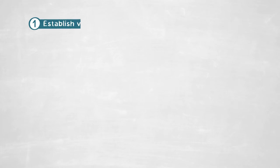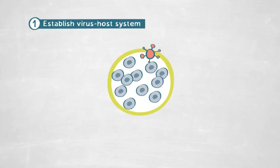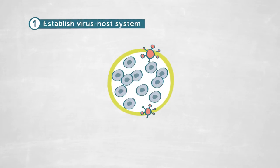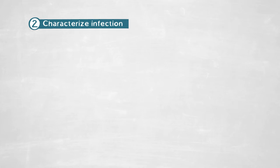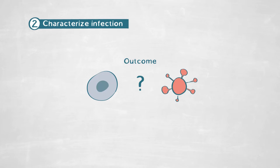To answer our research question, first, we needed to establish a very stable system of virus and host that we could reproduce and manipulate in the laboratory. Second, we needed to characterize this chronic infection and assess what the outcome of it is for the host and the virus.